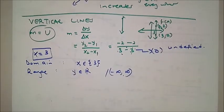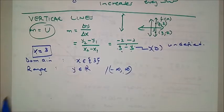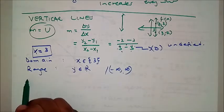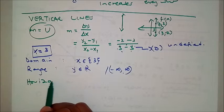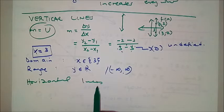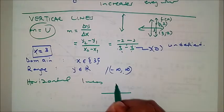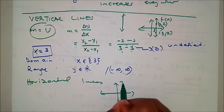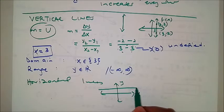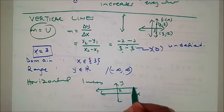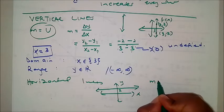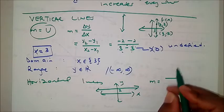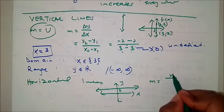Now let's look at horizontal lines. For horizontal lines, the gradient equals zero. You have a zero change in y and a non-zero change in x, so zero divided by any number equals zero.